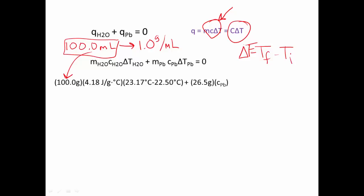Now we're going to fill in the terms for our lead. We know that it's 26.5 grams, and we are solving for its specific heat. So I'm going to put in the variable for specific heat there. Now we can plug in our delta T. Our lead started at 104.46°C, and it ended at 23.17°C.